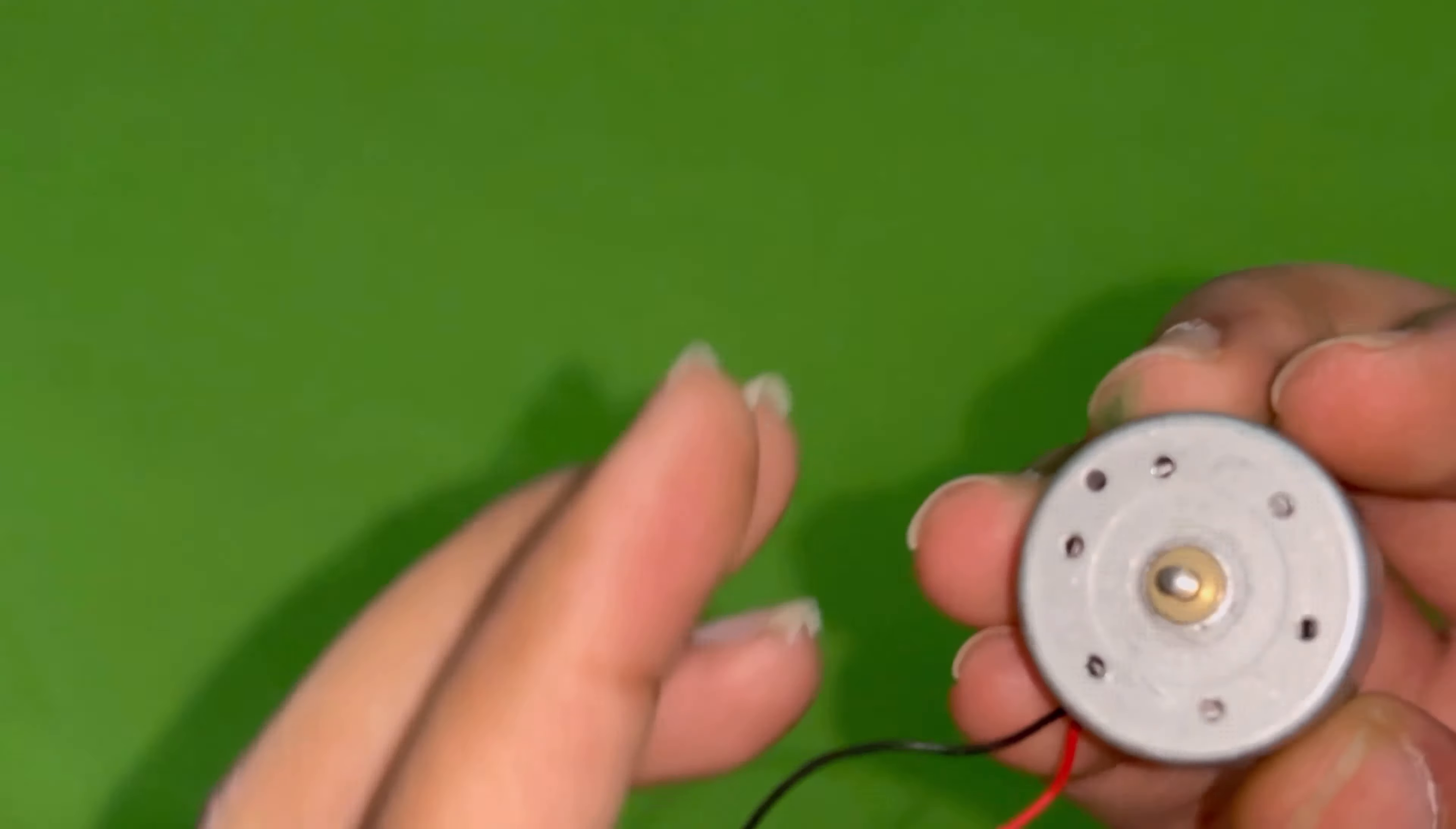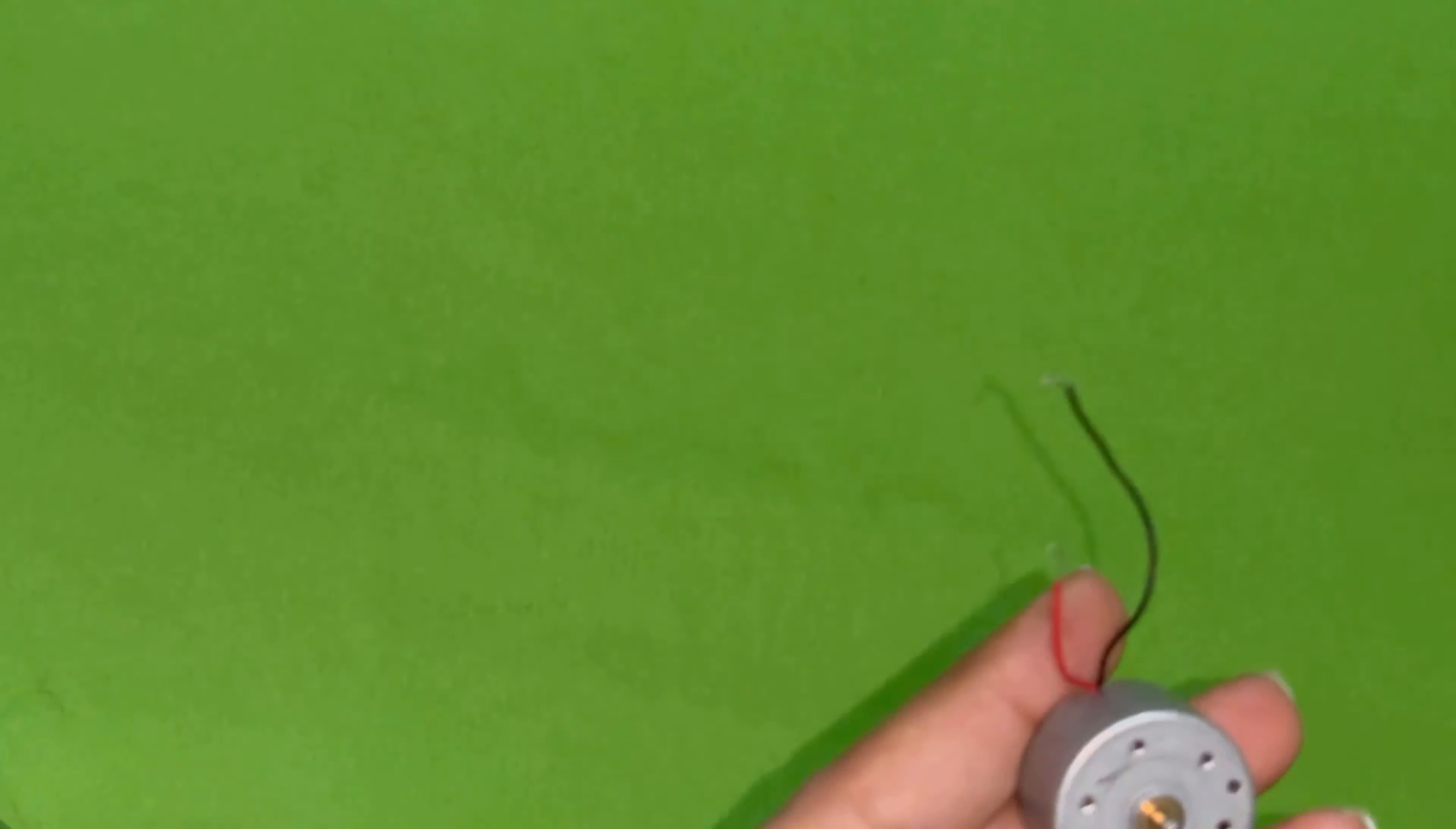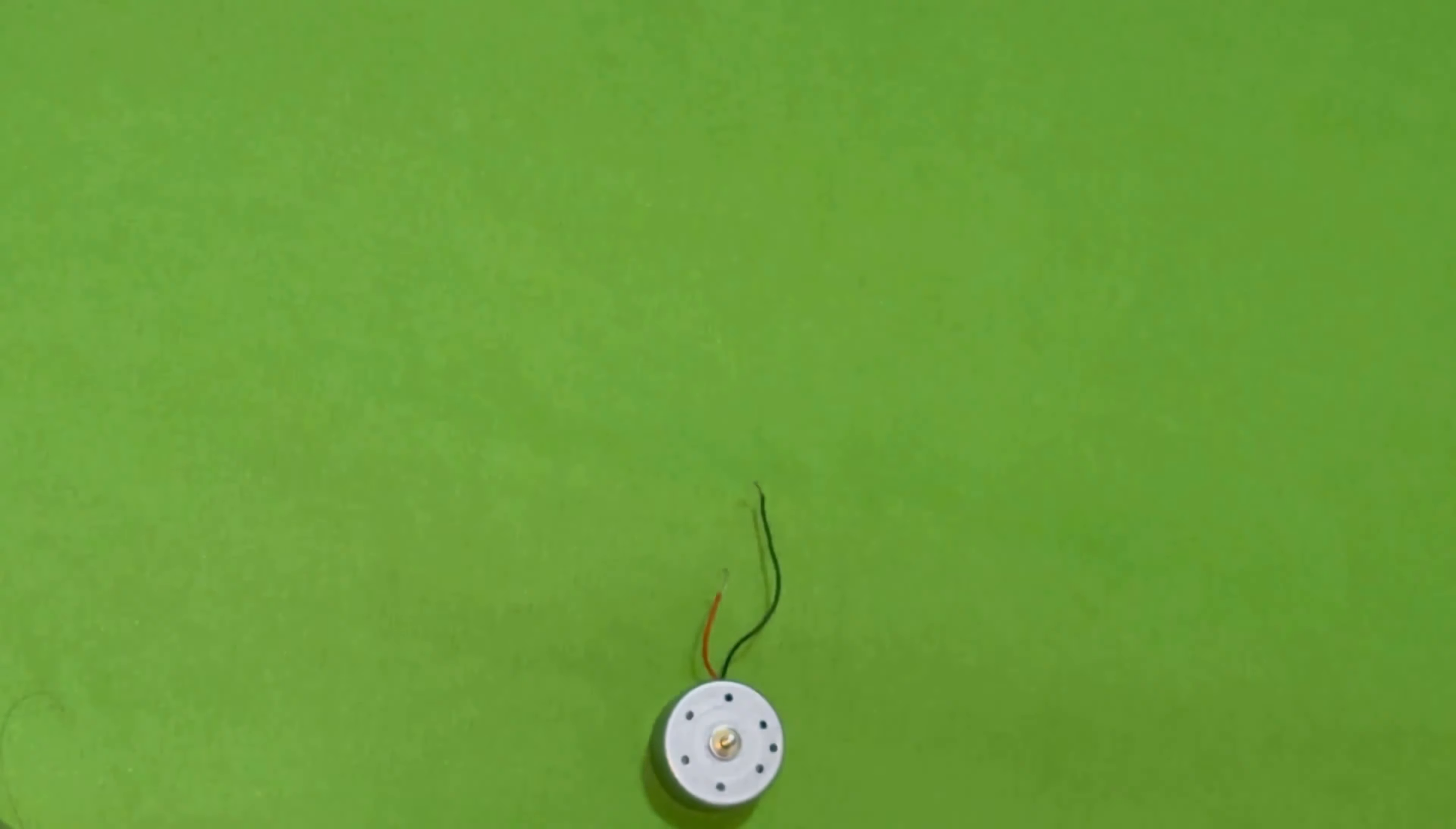First of all, we have DC motor. You can see this is a DC motor. We will need this to move the fan. These are wires.